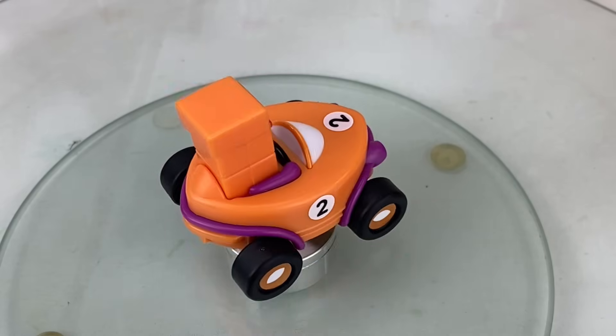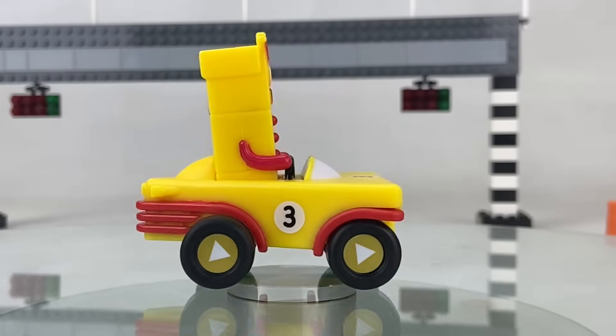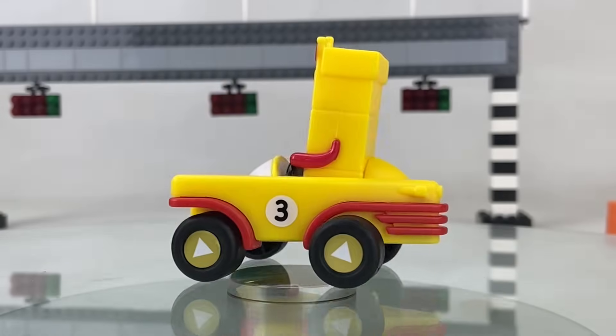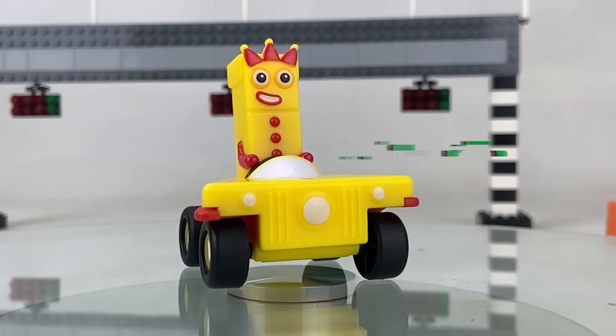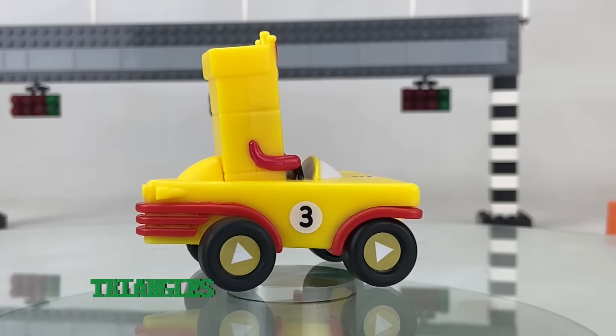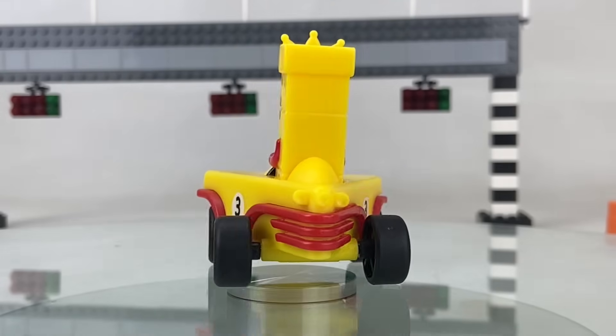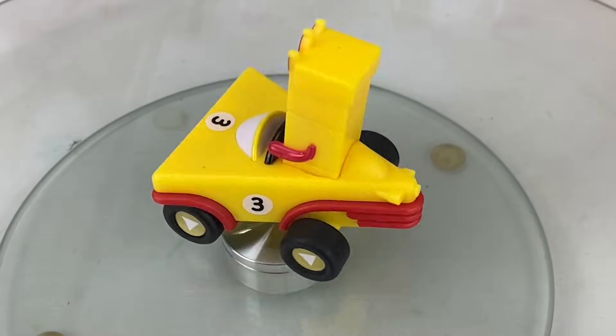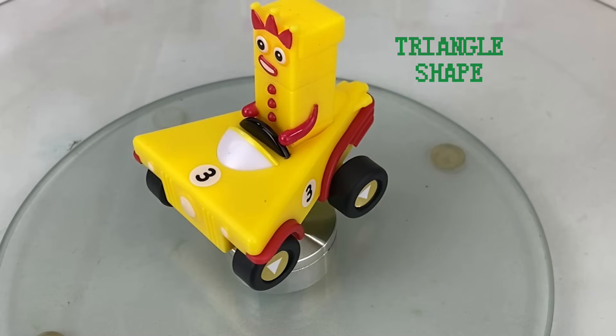Driver number three's car is of course yellow. This one has three headlights and three stripes. The wheels have a triangle print and the rear has three tailpipes. From the top we can see the car has three sides which makes it a triangle.